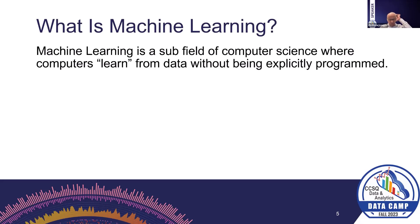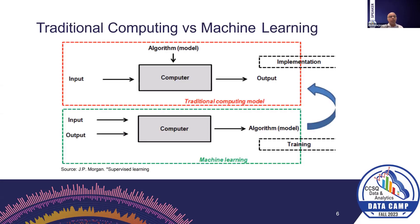What is machine learning? It's a subfield of computer science where computers learn from data without being explicitly programmed. ML is an umbrella term for solving problems for which development of algorithms by human programmers would be cost-prohibitive. Instead, the problems are solved by helping machines discover their own algorithms without needing to be explicitly told what to do.